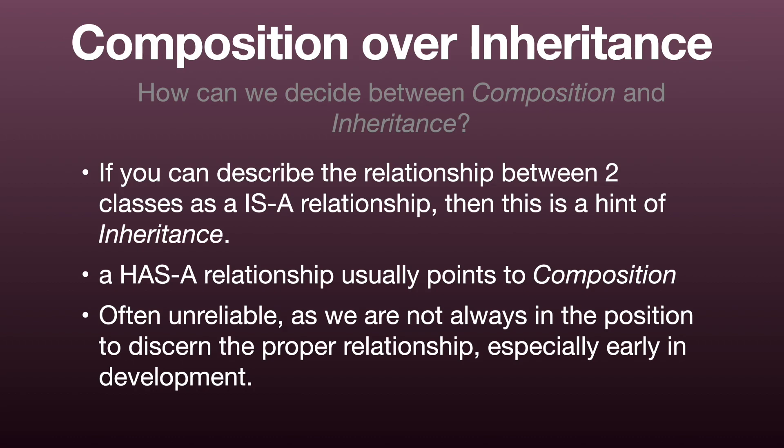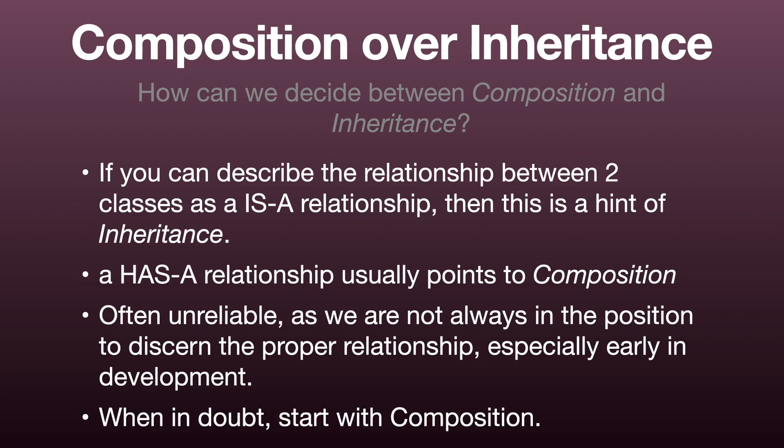Use inheritance when you are absolutely certain that you know the whole context of the software, how it will evolve, and what its limits are. But this is really hard — that's why you need to document and design for inheritance, or else prohibit it. You need to be in control from the beginning. When in doubt, use composition.